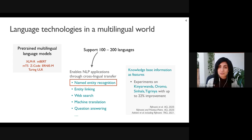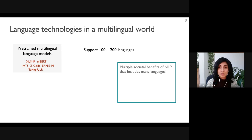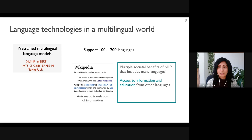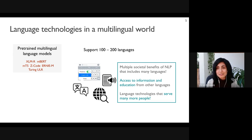I've also worked on low-resource named entity recognition using information from knowledge bases as additional features, improving performance on multiple low-resource languages. Having NLP models inclusive of a large number of languages has multiple societal benefits — it enables access to information and education in other languages. For example, if we could automatically translate Wikipedia content to many different languages, everyday technologies can serve many more people.